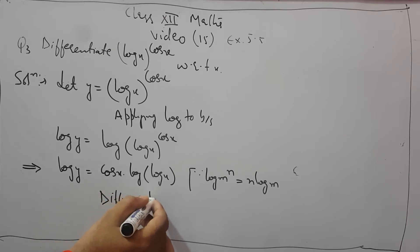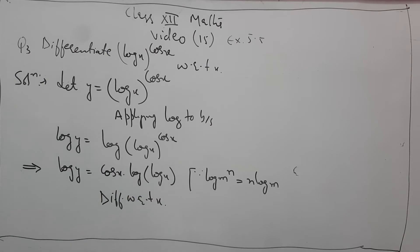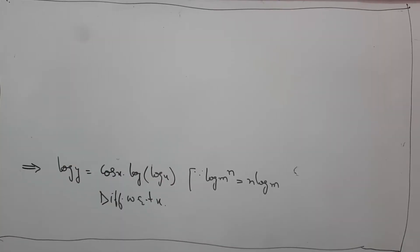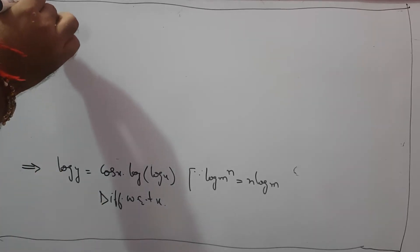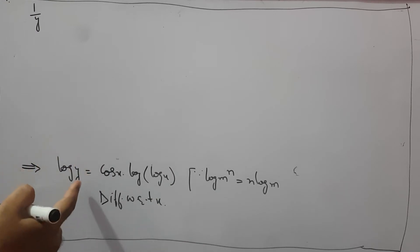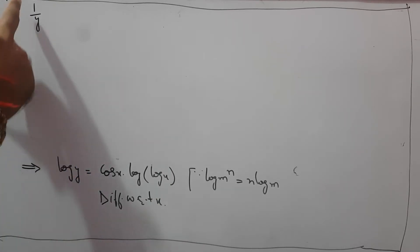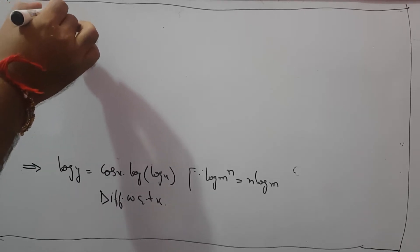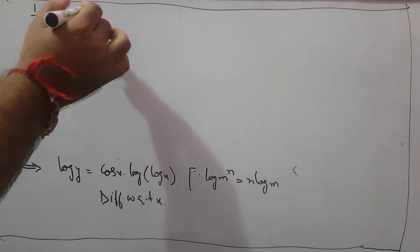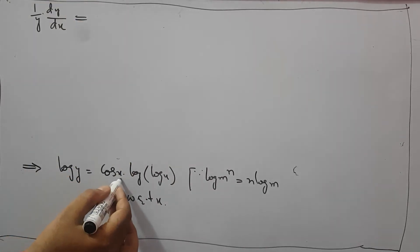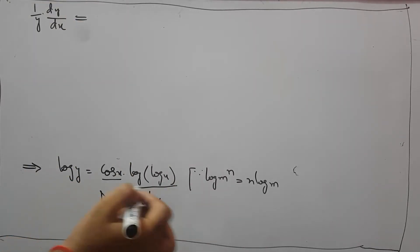Differentiating with respect to x. Before differentiating I will rub out the previous working. Now I will differentiate. The derivative of log y is 1 upon y — since the derivative of log x is 1 upon x, and here we have y, so I write 1 upon y, and further the derivative of y is dy upon dx. On the right side we will use the product rule. This is the first function and this is the second function.